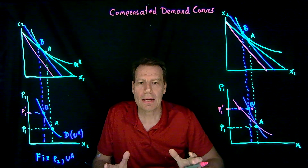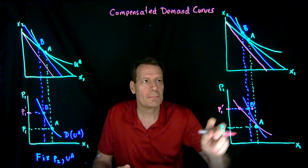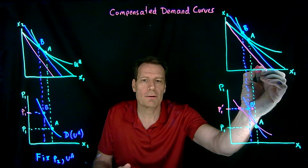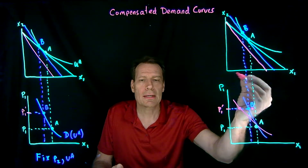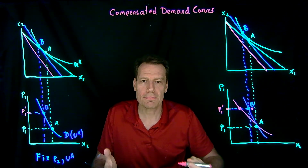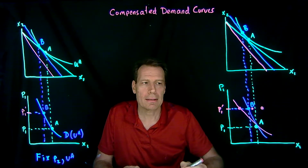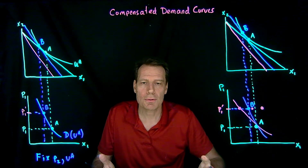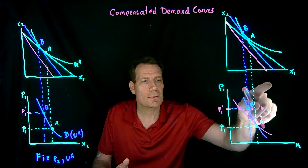Finally, consider the strange case of a Giffen good — a good where if the price increases, you consume more. When the price increases, you'd consume more than at point A, ending up to the right of point A. The income effect is so large it outweighs the substitution effect. A Giffen good is an inferior good with a really big income effect relative to the substitution effect. For that kind of good, point C lies to the right of point A, and the regular demand curve slopes upward — consistent with what we said when we first introduced Giffen goods.